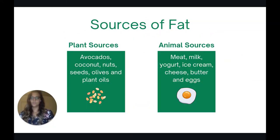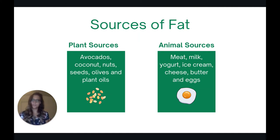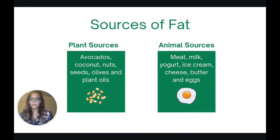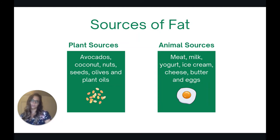So, sources of fat. You can get fat from plants and you can get fat from animals. Plant sources include avocados, coconut, nuts, seeds, olives, and plant oils. Animal sources are foods like meats, milk, yogurt, ice cream, cheese, butter, and eggs.